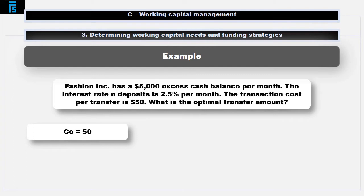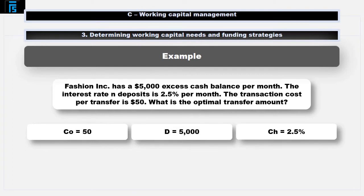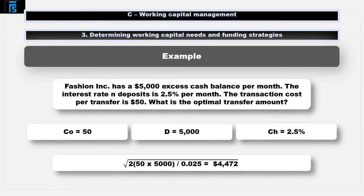CO equals 50, D equals 5,000, and CH equals 2.5%. The square root of 2 multiplied by 50 multiplied by 5,000 divided by 2.5% equals $4,472. Every time a transfer is made to the investment fund, it should be $4,472.